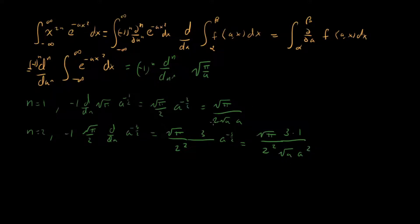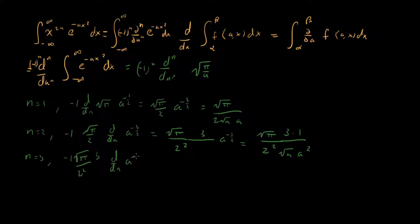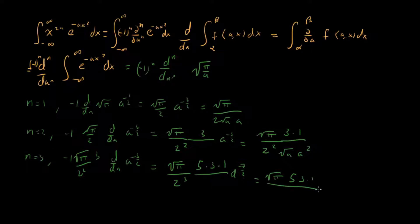A pattern is emerging — we had a two, then a two squared, and we'll likely get a two cubed. For n equals three, we take the derivative of the n equals two result to get root pi over two cubed, times five times three times one, times a to the minus seven halves — also written as root pi times five times three times one over two cubed times root a times a cubed.